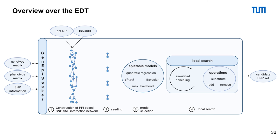As an output, we retrieve candidate SNPs ranked by their corresponding score from the selected model, or in the event of the majority vote, we calculate a discounted cumulative gain.